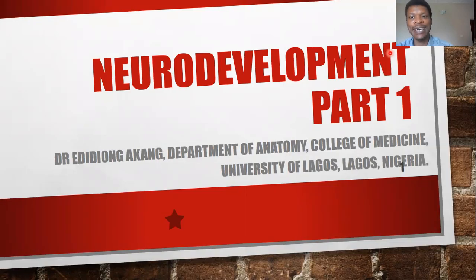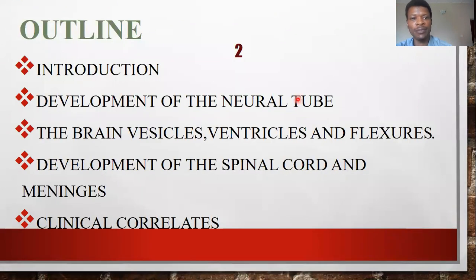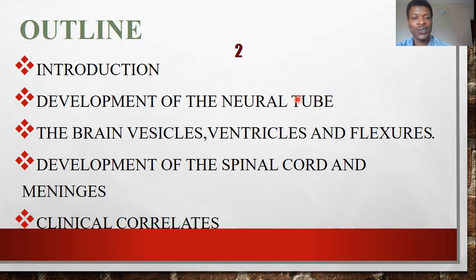Hello everyone, welcome to masteranatomy.info. I'm your favorite lecturer, Dr. Akand, and today we'll be looking at neurodevelopment. We'll emphasize the development of the spinal cord. We'll look at the formation of the neural tube, the brain vesicles and their ventricles and flexures, then the spinal cord and meninges, and finally the clinical correlates. So let's go.